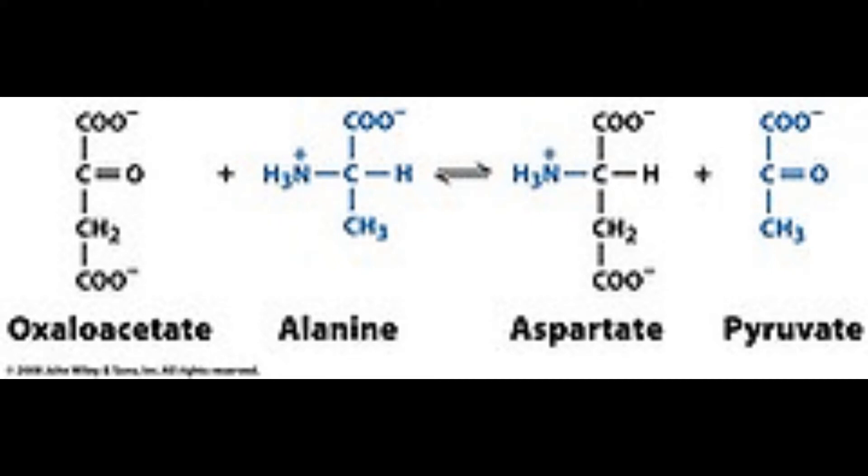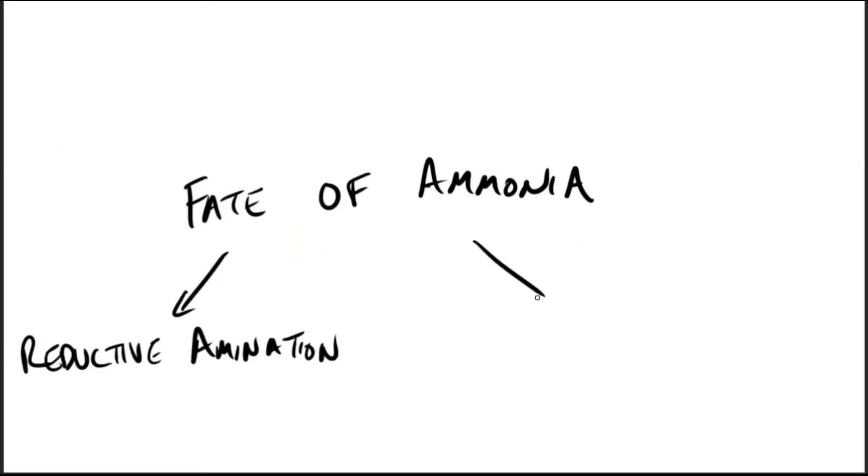Second is the ATP-requiring formation of glutamine from glutamate and ammonia by glutamine synthetase, which occurs primarily in the muscle and the liver. But it is also important in the CNS, where it is the major mechanism for the removal of ammonia in the brain.